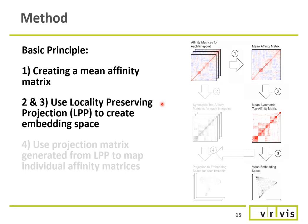We start with one affinity matrix for each time point, which we ultimately want to compare. Over these affinity matrices, we compute the mean affinity matrix. Then we use Locality Preserving Projection or LPP, which is a linear approximation of nonlinear dimensionality reduction to create the embedding space.